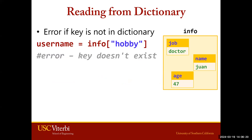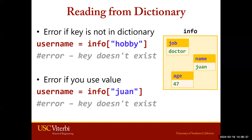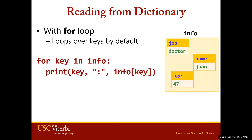When reading from a dictionary, you can potentially get an error, especially if the key you provide is not in the dictionary. For example, providing the key hobby will error because hobby does not exist within our info dictionary. Another error is using the value instead of a key — using Juan, which is a value associated with the name key, will give an error because we cannot search for information using a value. Since Juan is a value and not an existing key, this will create an error.